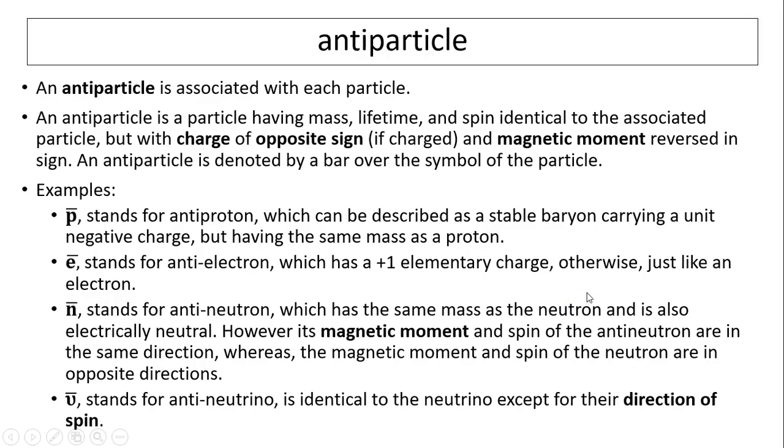Antiparticle. An antiparticle is associated with each particle. An antiparticle is a particle having mass, lifetime, and spin identical to the associated particle, but with charge of opposite sign if it is charged. For example, antiproton is the same as proton, has the same mass, same spin, everything is the same, except it has a negative charge, negative one elementary charge. If it doesn't have charge, what's the difference? The difference is the magnetic moment is reversed. That means the way it spins is reversed.